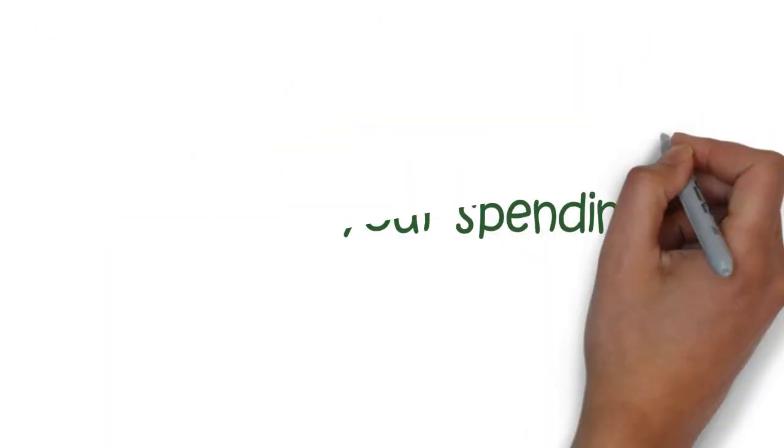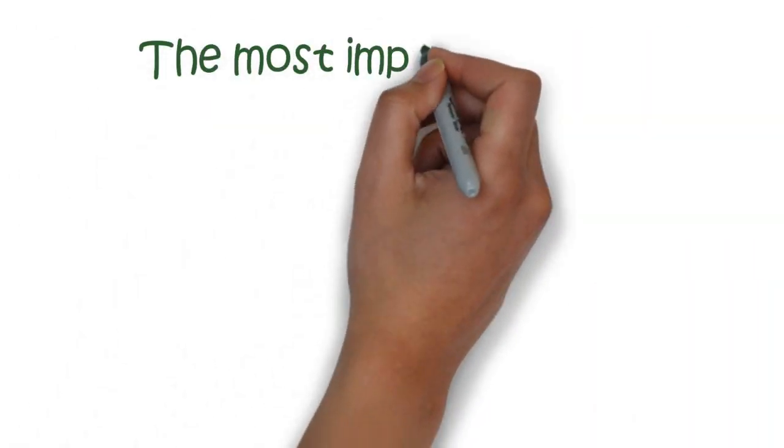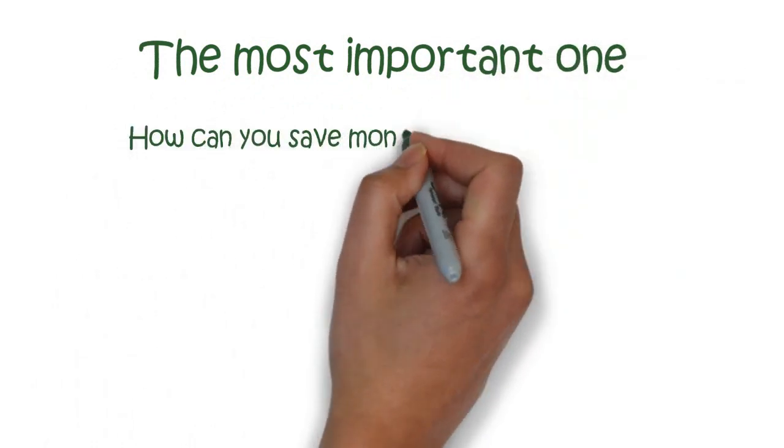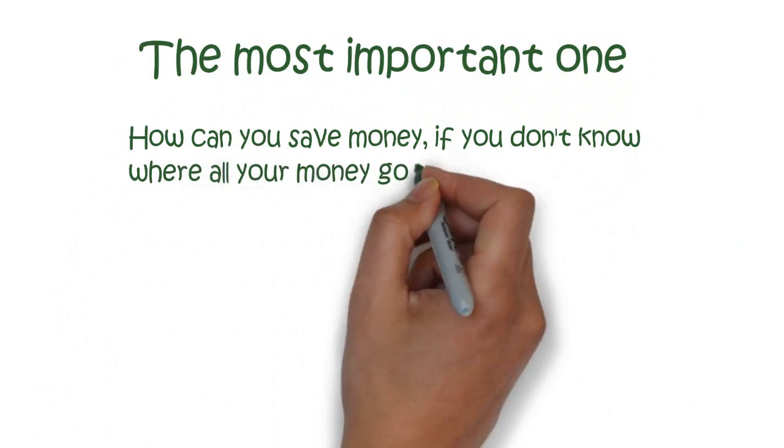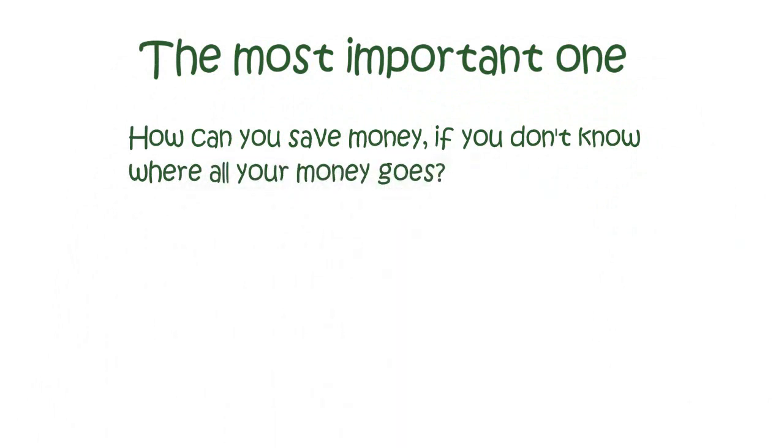Number 10. Track your spending. Last but not least is to track your spending. This is the most important one. How can you save money if you don't know where all your money goes? Just a reminder, the point of this isn't to save every cent you spend.